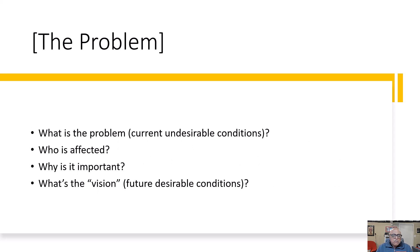You want to start out indicating the problem that this business is seeking to solve. What are the current undesirable conditions? Who's affected by these conditions? Why is this problem important and why does it need to be solved? And what's the vision of the future — the future desirable conditions that this business is attempting to bring about?